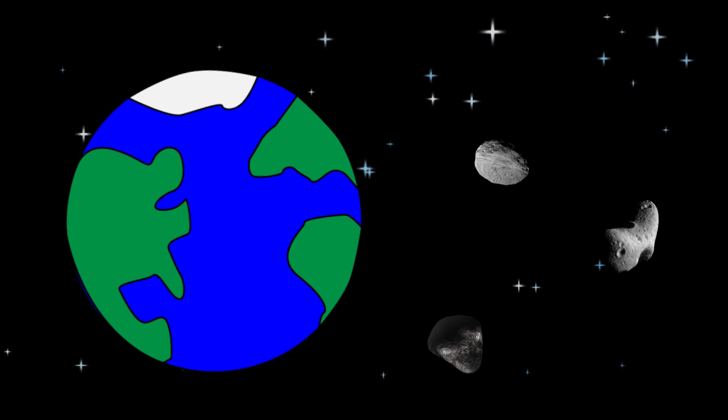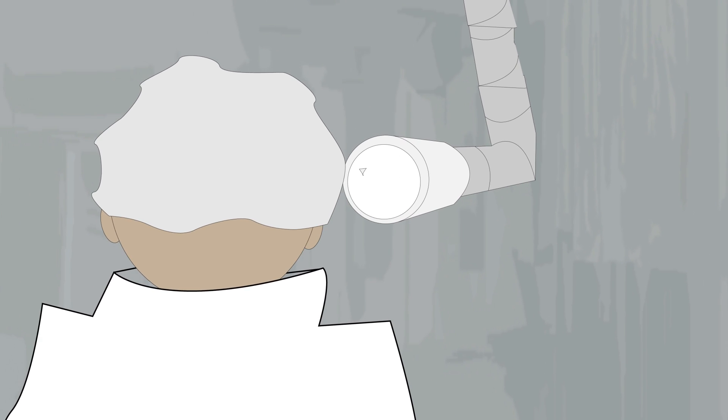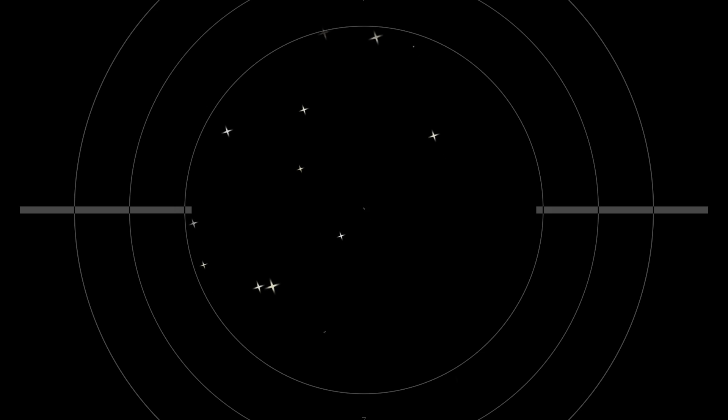With asteroids being the most plentiful objects in our solar system, you'd think they'd be easier to find. But if you look up at the night sky, even with a powerful telescope, the best you're gonna get is a small dot that looks just like a star.